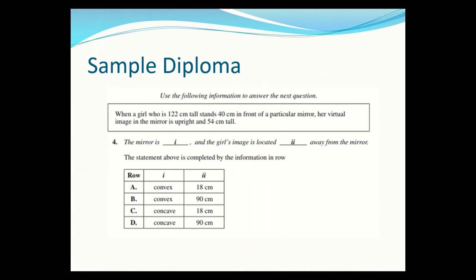This is a second attempt at recording this video because the first one didn't work. So here's a sample diploma question: we have a girl who is 122 centimeters tall, stands 40 centimeters in front of a particular mirror. Her virtual image in the mirror is upright at 54 centimeters. We need to find out what type of mirror it is and where the girl's image is located.